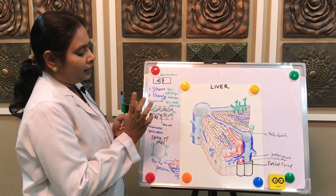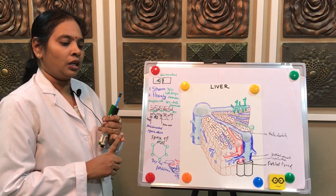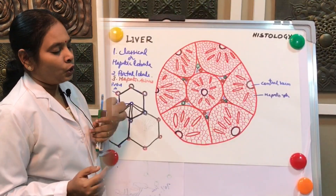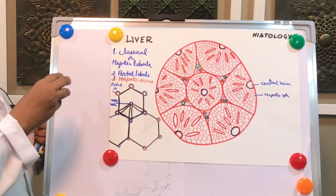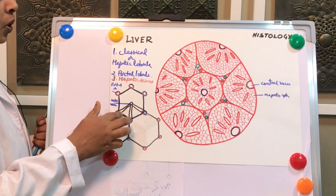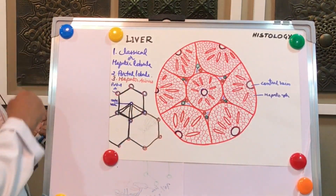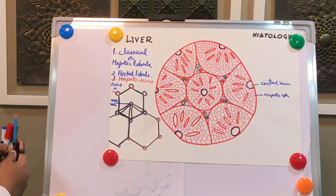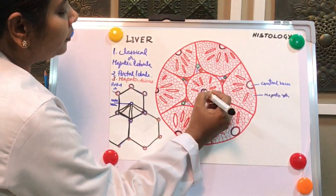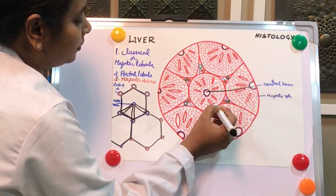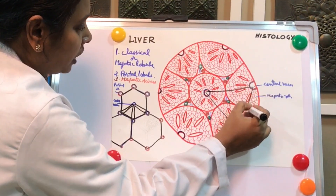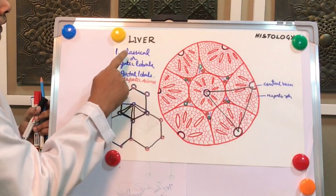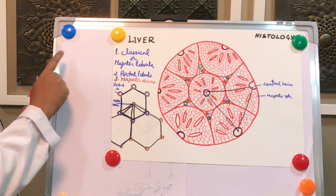Other than the classical hepatic lobule, there are two more types: the portal lobule and the hepatic acinus. The classical or hepatic lobule is not the functional lobule — it is otherwise called the venous unit because the central vein is present in the center. The portal lobule is formed by joining the central veins of adjacent hepatic lobules and is the nutritional unit of the liver.